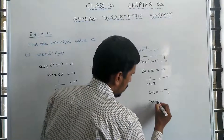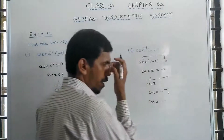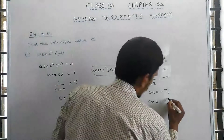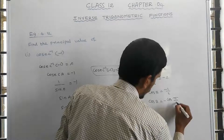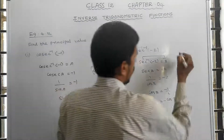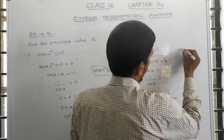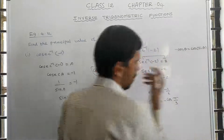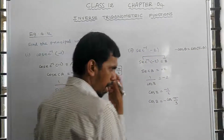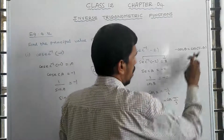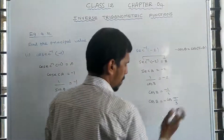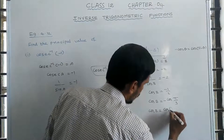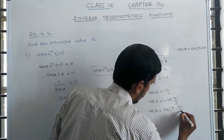cos b equals minus 1 by 2. The cos value of 1/2 corresponds to 60 degrees, that is π/3. To handle the negative, we use the identity: minus cos θ equals cos(π minus θ). With θ equal to π/3, cos b equals cos(π minus π/3).